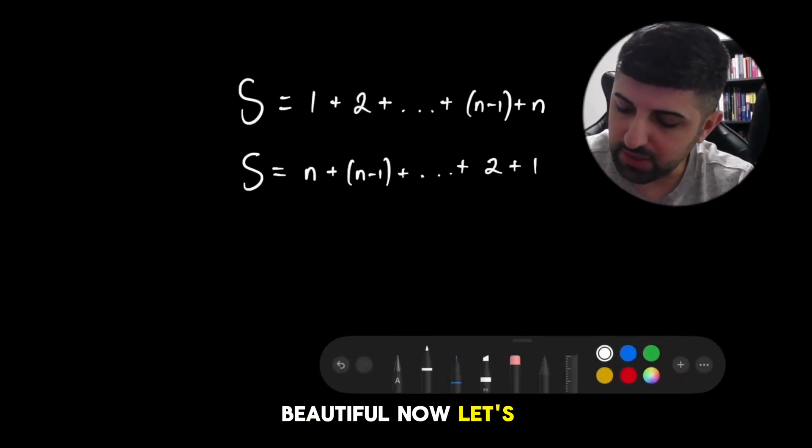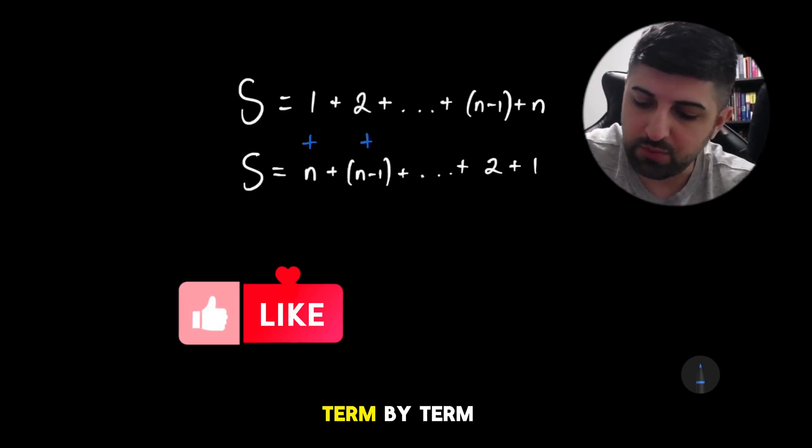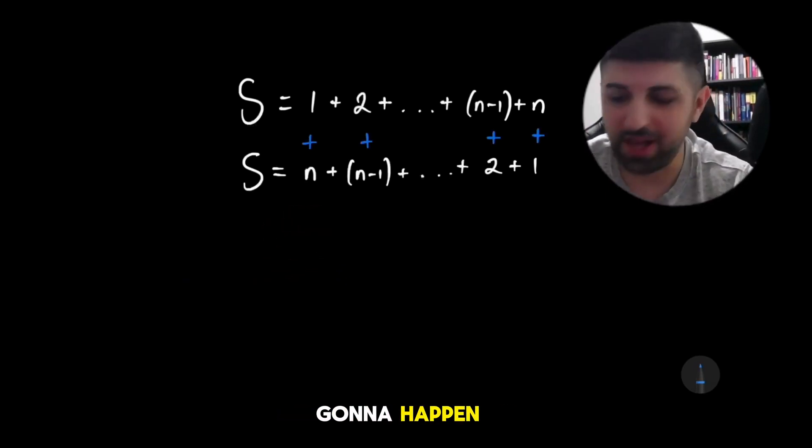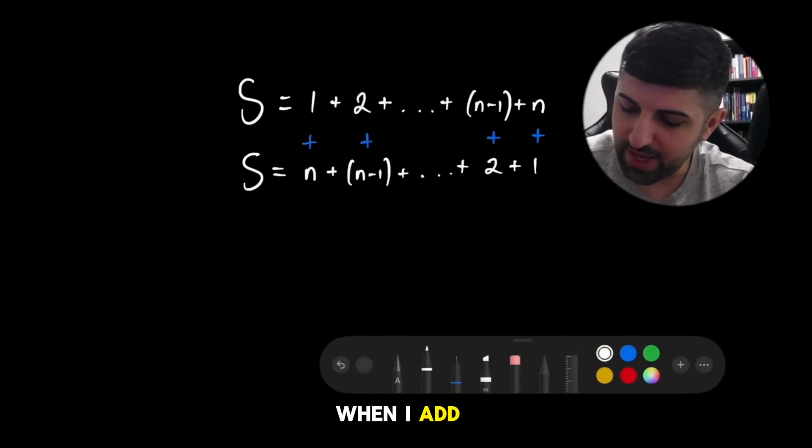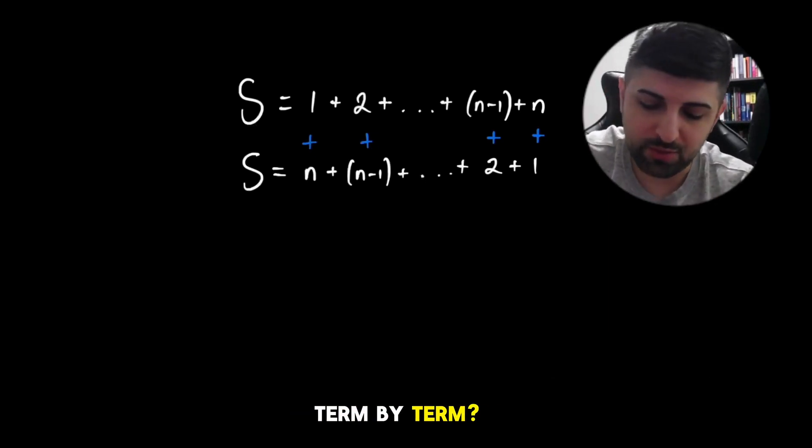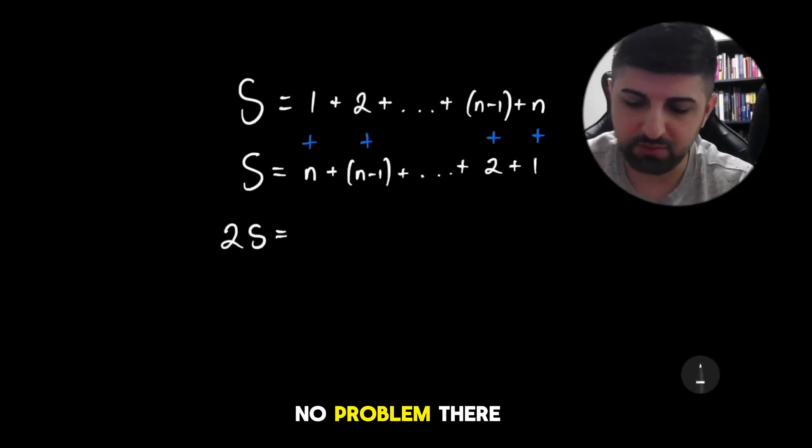Beautiful. Now let's add the two equations. Let's add them term by term. Something special is going to happen. So what happens when I add all of these numbers term by term? The left side becomes 2S, no problem there.